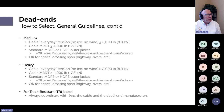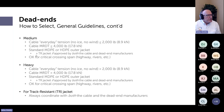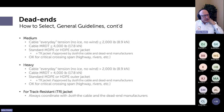Medium duty dead ends: cable everyday tension less than 2,000 pounds, MRDT less than 4,000 pounds, medium density or high density outer jacket, and if it's a tracking resistant jacket it's acceptable if approved by both the cable and dead end manufacturers. Medium duty dead ends are okay for critical crossings.